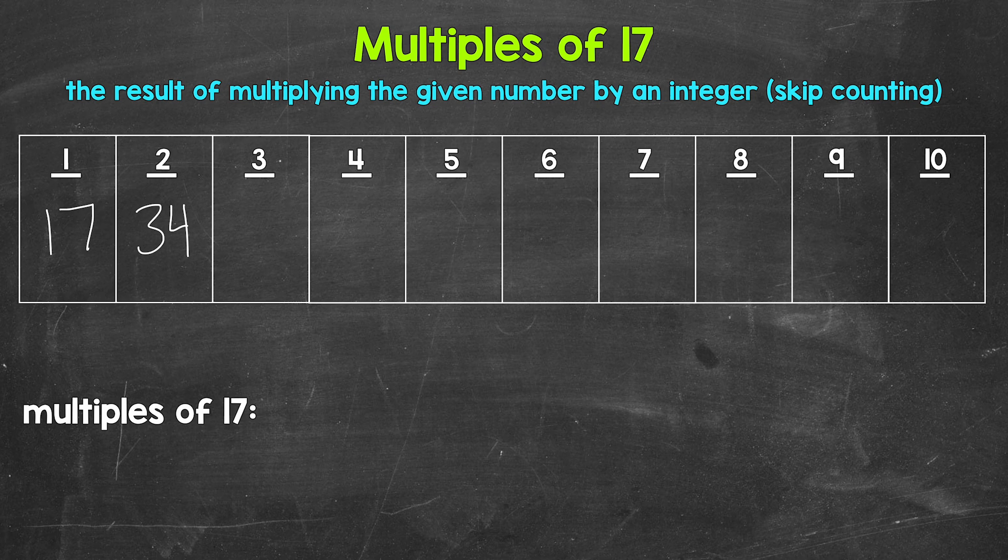Then we move on to 3 times 17. That's 51. 4 times 17. 68. 5 times 17. 85.